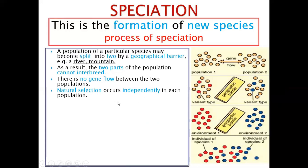Natural selection occurs independently. Because of the different environmental conditions on each side, natural selection will occur differently. The different environmental conditions will result in natural selection occurring independently in each population.